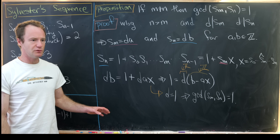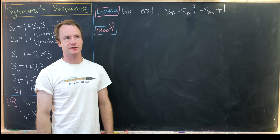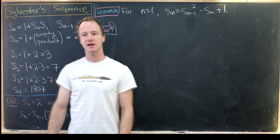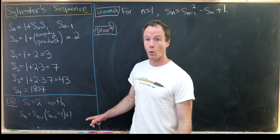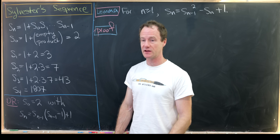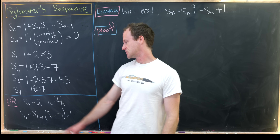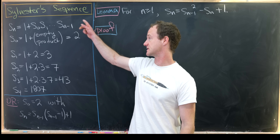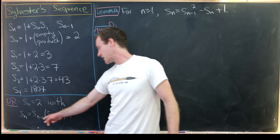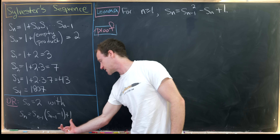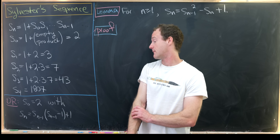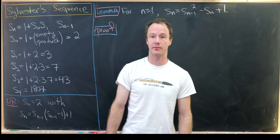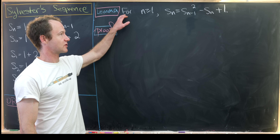Now let's move on to our second result, which involves the sum of the reciprocals of the Sylvester sequence. For this we need the following lemma, which gives a one-step non-linear recursion: set S₀ equal to two, and then S_n equals S_{n-1} times the quantity S_{n-1} minus one, plus one — in other words, S_n = S_{n-1}² - S_{n-1} + 1.